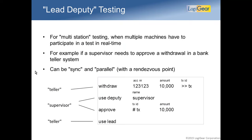Another technique is multi-station testing — multiple test machines running against the same system under test. For example, one machine mimics a bank teller wanting to withdraw $10,000 from an account, but the supervisor on another machine needs to approve that. 'Use deputy' means the other machine gets control, does the approval, then goes back to the lead machine mimicking the banking teller. These are the most important techniques for action-based testing.